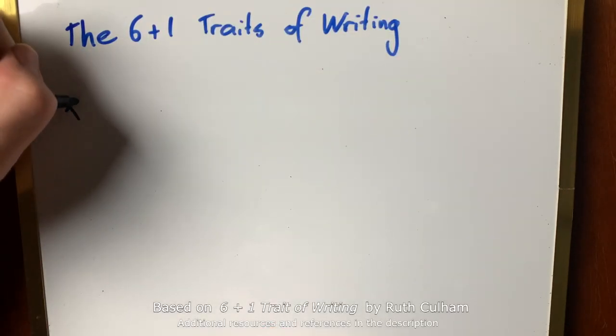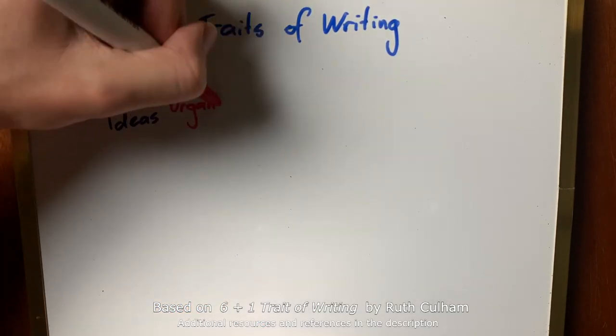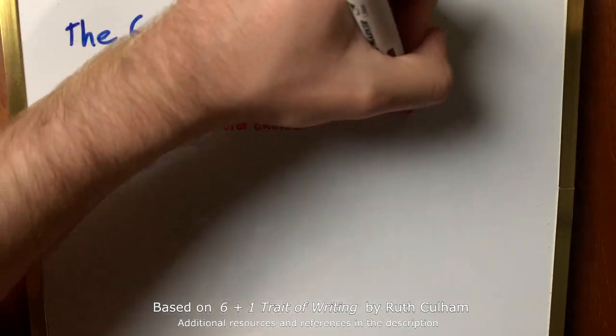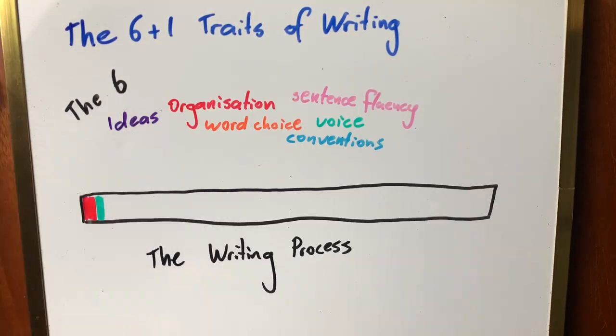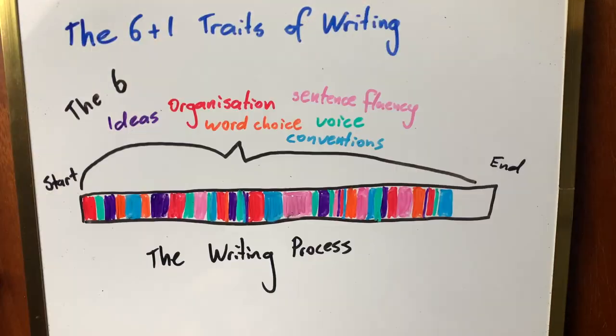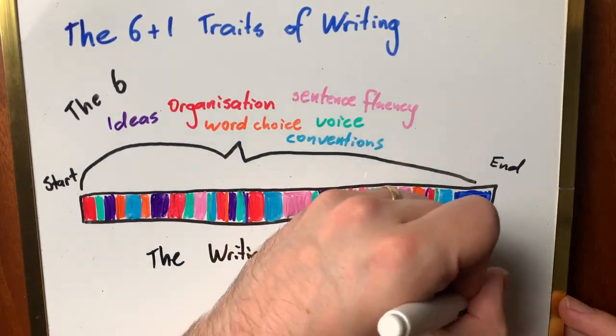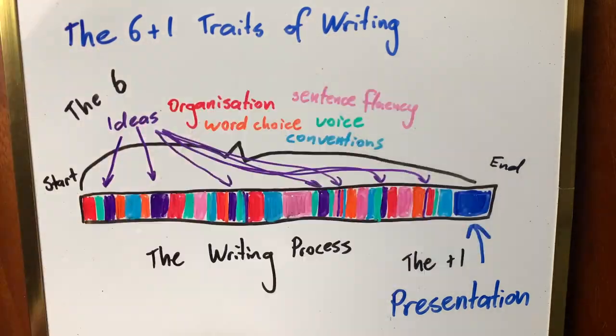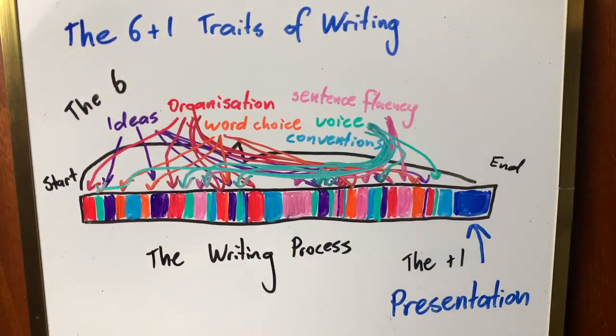The six plus one traits of writing has the six: ideas, organization, word choice, sentence fluency, voice, and conventions. These are things we think about during the entire writing process. But there is a plus one. It's important, but something we can think about after we have everything else, and that's presentation.